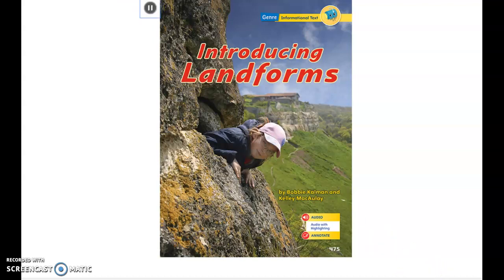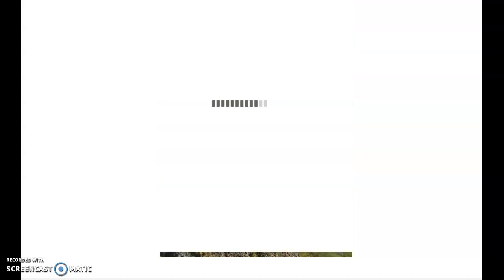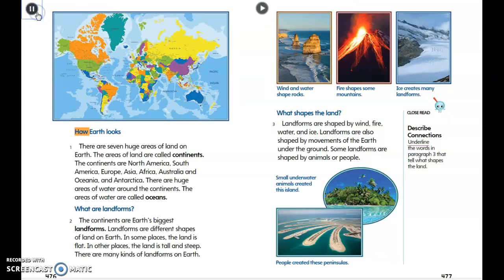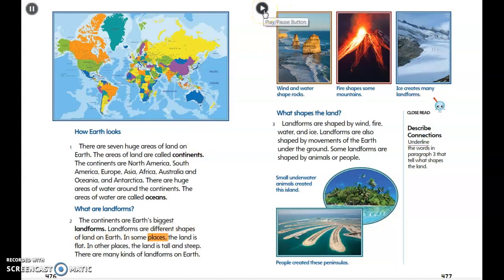Introducing Landforms by Bobby Kalman and Kelly Macaulay. There are seven huge areas of land on Earth called continents: North America, South America, Europe, Asia, Africa, Australia and Oceania, and Antarctica. There are huge areas of water around the continents called oceans. The continents are Earth's biggest landforms. Landforms are different shapes of land on Earth.